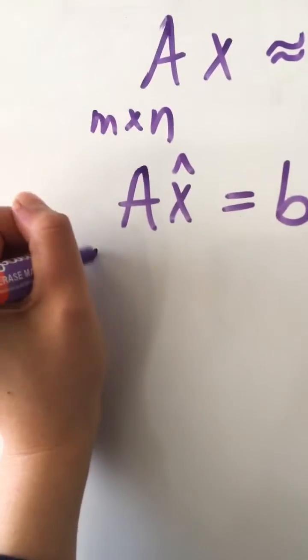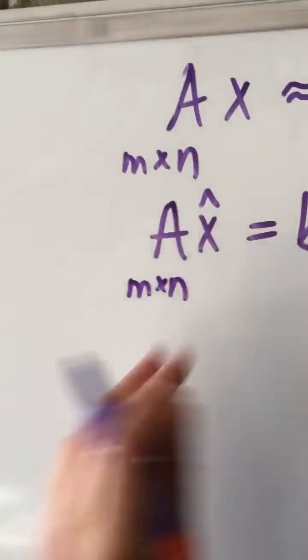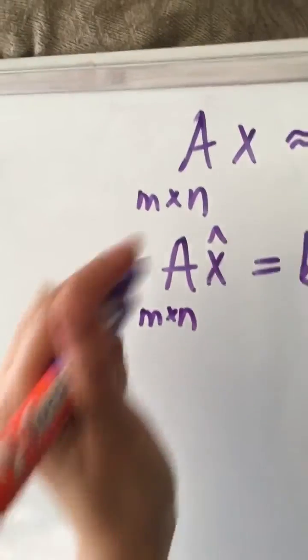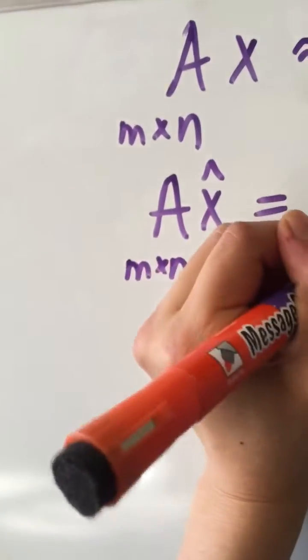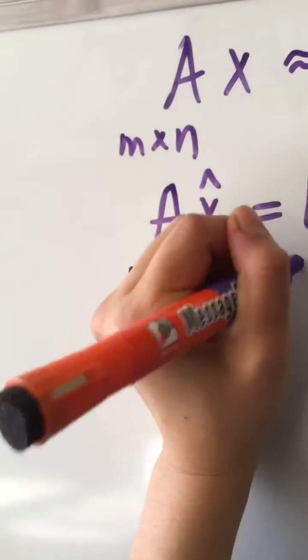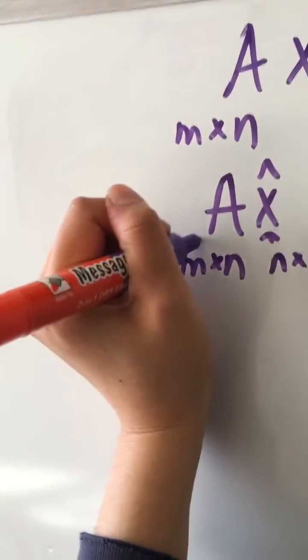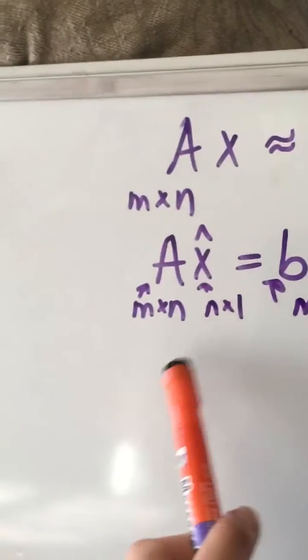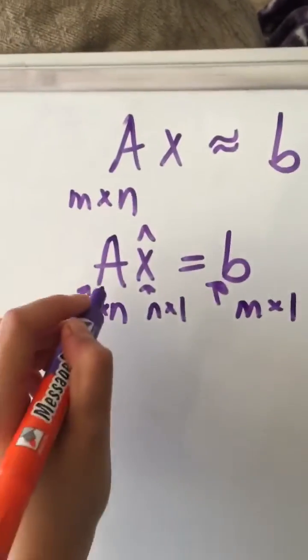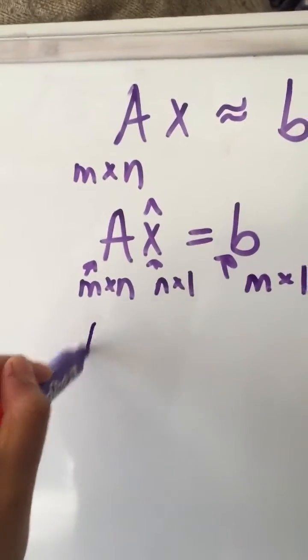Notice how since we cannot solve this way, we can left hand multiply this equation by A transpose.